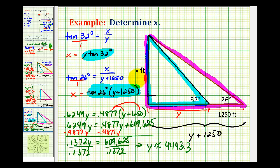But remember, our goal is to determine x. We can use this equation now that we have y to determine x. x is going to be approximately equal to 4,443.3 times tangent 32 degrees.